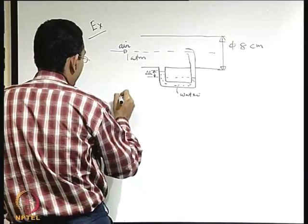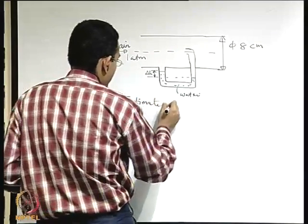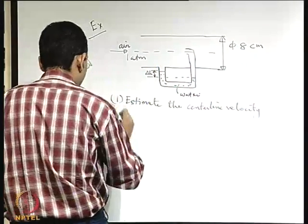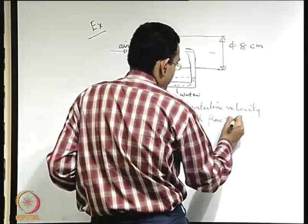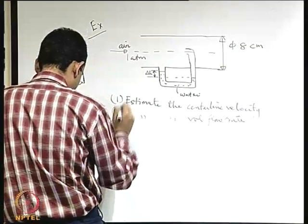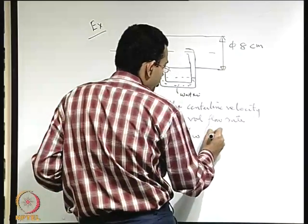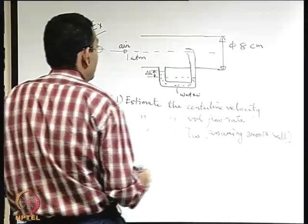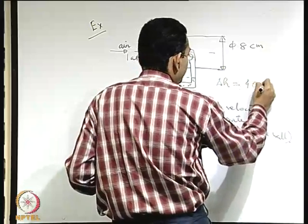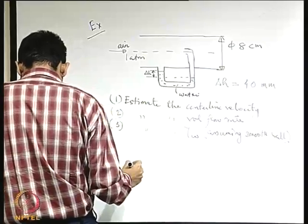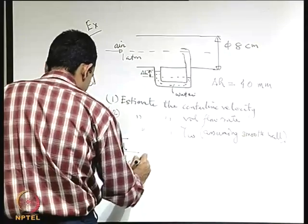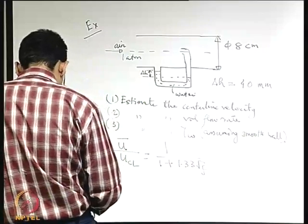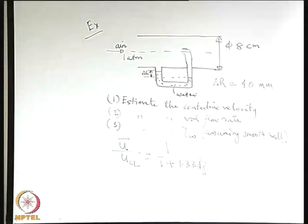What we are asked: first, estimate the centerline velocity; second, estimate the volume flow rate; and third, estimate the wall shear stress assuming a smooth wall. The given data is delta H equals 40 millimeters, and the relationship between the centerline velocity and the average velocity is given as 1 over (1 plus 1.33 times the square root of f), where f is the friction factor.